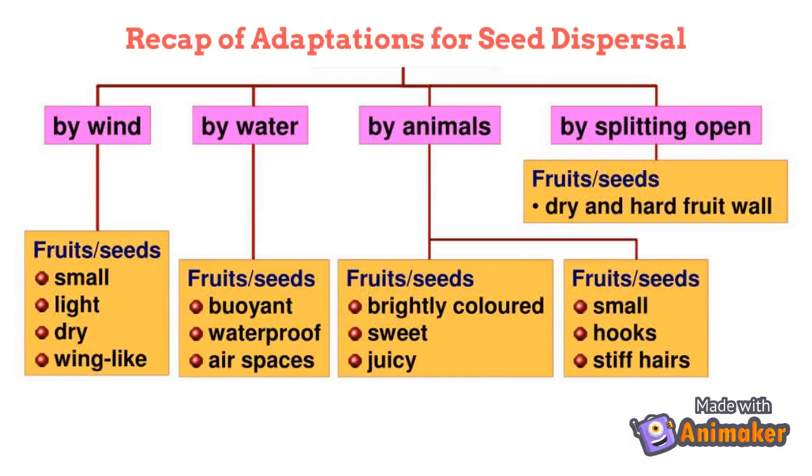Look at the image carefully for the recap of the adaptations made by fruits in order to disperse seeds to support the purpose of reproduction.